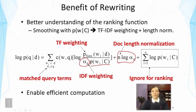But as we will see later, when we consider some specific smoothing methods, it turns out that they do penalize long documents. Just like in TF-IDF weighting and document length normalization formulas in the vector space model. So that's a very interesting observation.